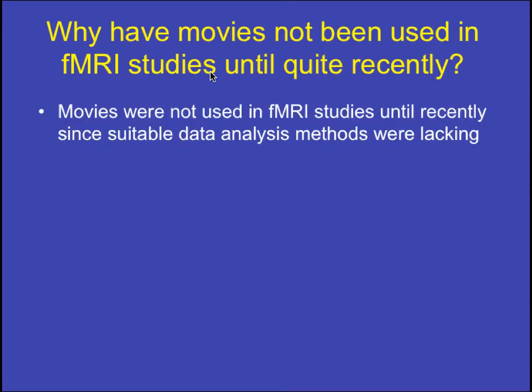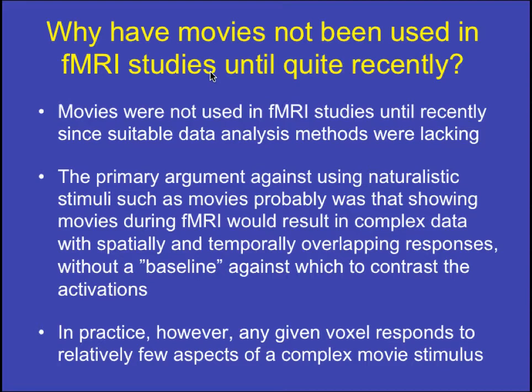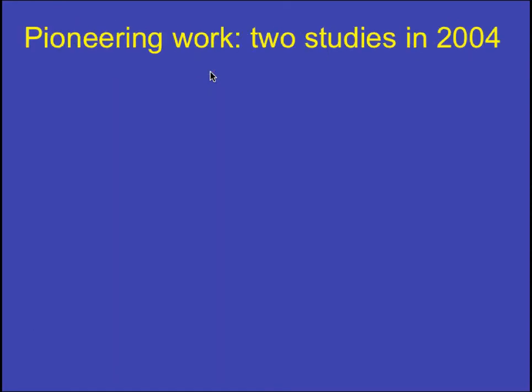Why have movies not been used in fMRI studies until quite recently? Suitable data analysis methods were lacking, and fMRI hasn't been around that long. The primary argument against movies was the assumption that fMRI would result in complex data with spatially and temporally overlapping responses, without a baseline against which to contrast activations. Fortunately in practice, any given voxel seems to respond to relatively few aspects of a complex movie stimulus.